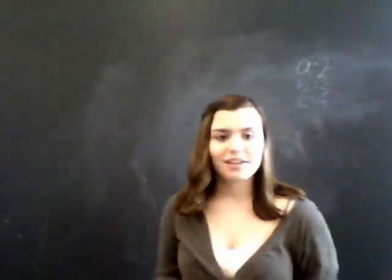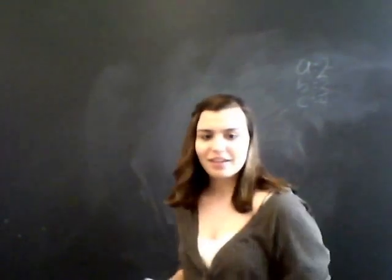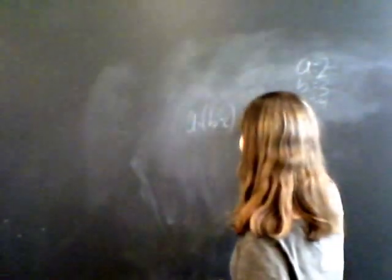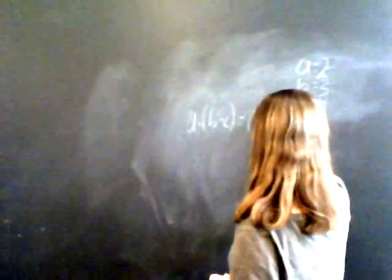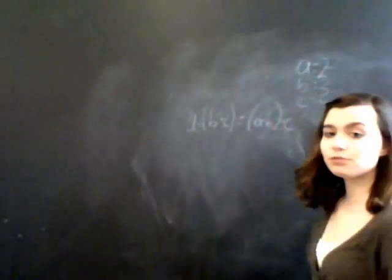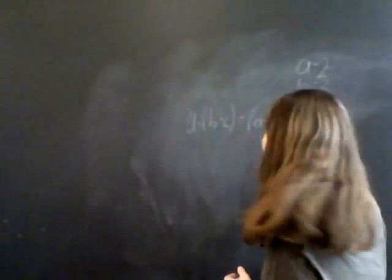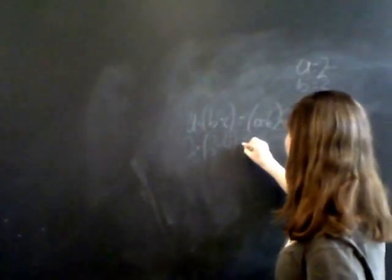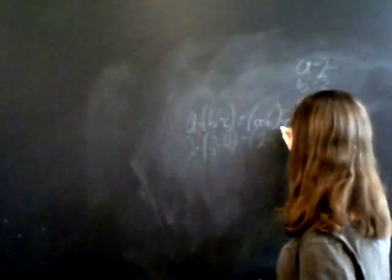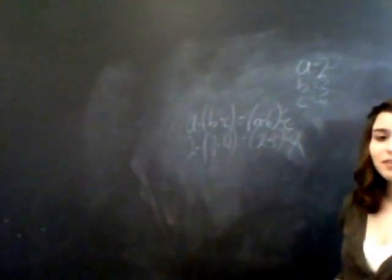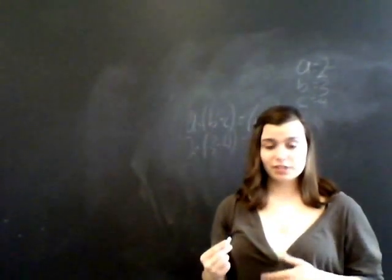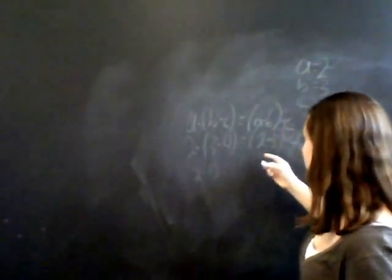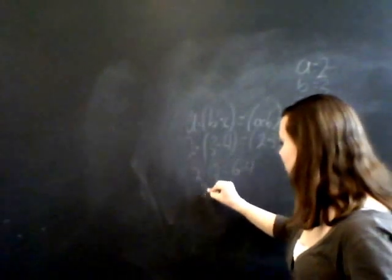The next property of real numbers is the associative property of multiplication. That means a times (b times c) is equal to (a times b) times c. This one links right back to the commutative property of multiplication. Parentheses only change the order of the equation, and since the order doesn't matter in multiplication, 2 times (3 times 4) equals (2 times 3) times 4. 2 times 12 equals 6 times 4 — they will both come out to be 24.